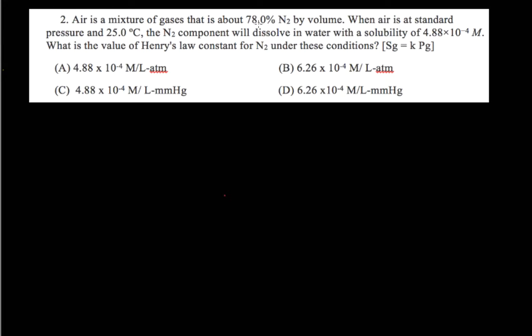This question says that air is a mixture of gases at 78% nitrogen gas by volume. When the air is at standard pressure of 1 atmosphere and 25 degrees Celsius, the nitrogen component will dissolve in water with a solubility of 4.88 times 10 to the negative 4th molar. What is the value of the Henry's Law constant for N2 under these conditions?